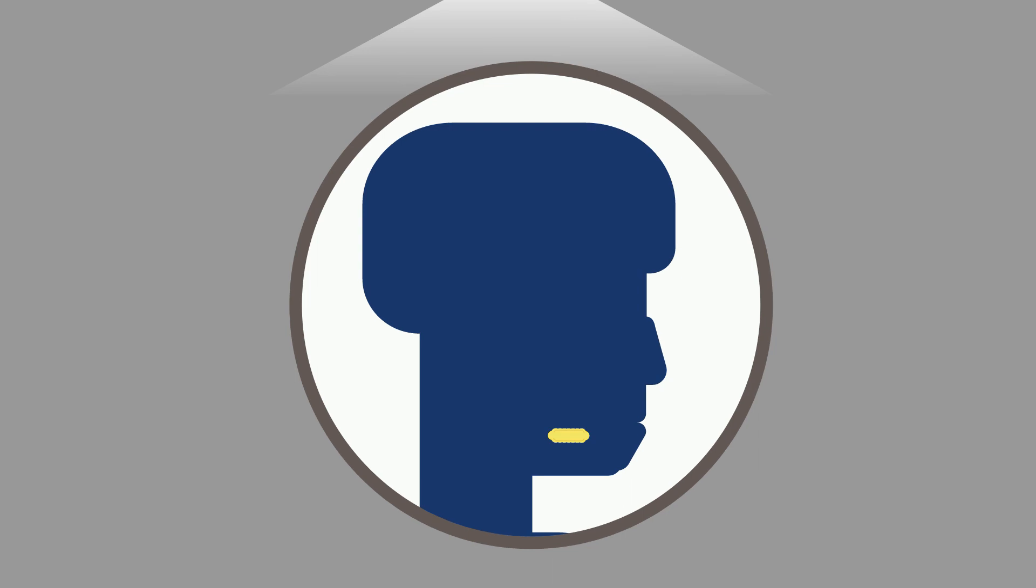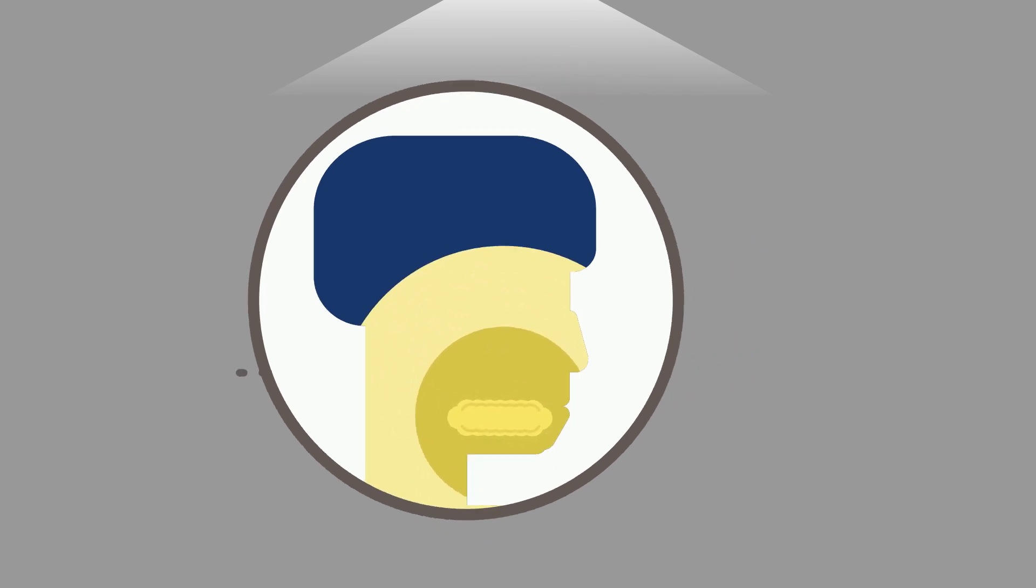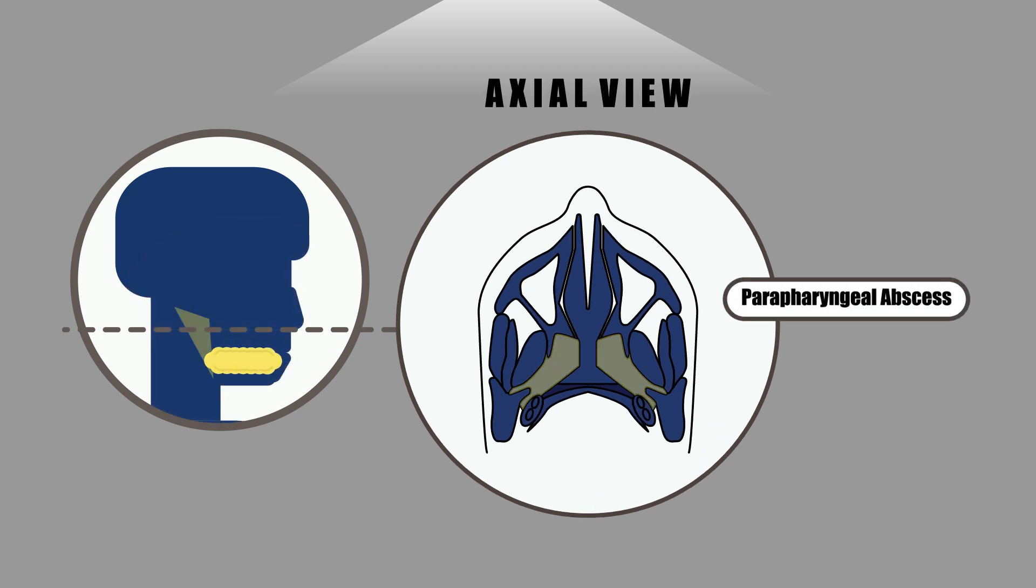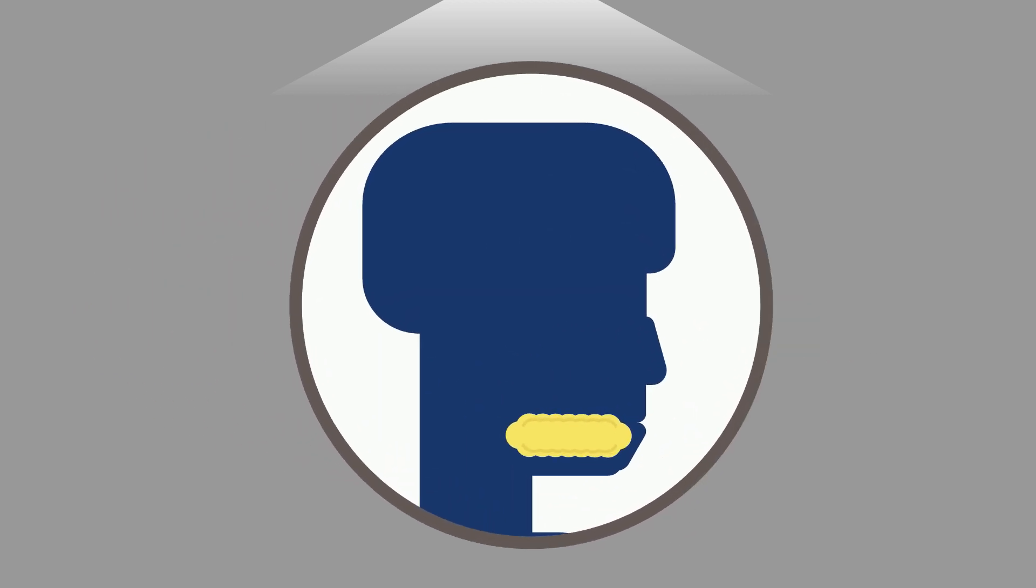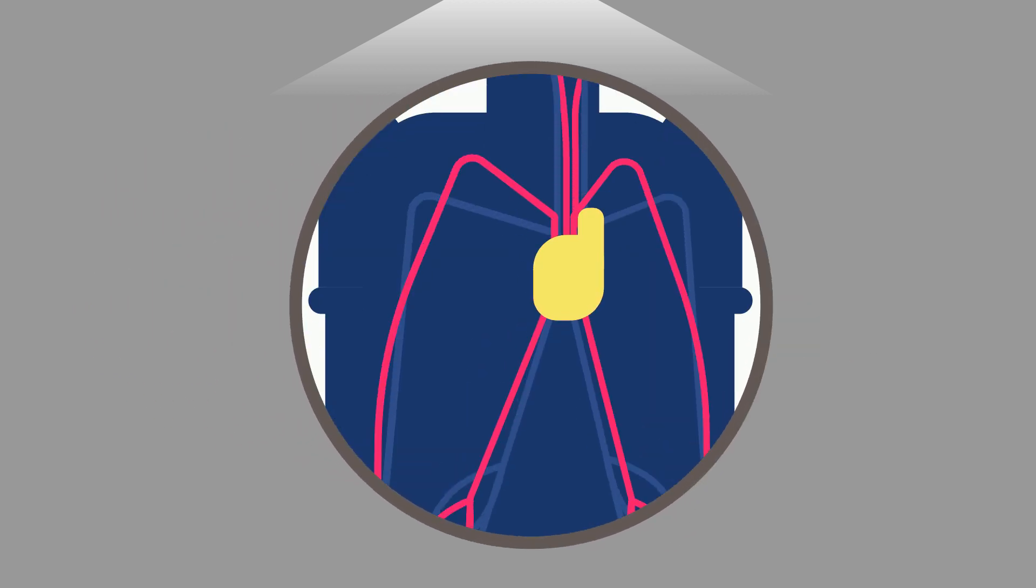Complications: The abscess or pus collection in Ludwig's angina can spread to nearby structures causing parapharyngeal and retropharyngeal abscess. Airway obstruction as it causes laryngeal edema causing larynx to swell up and obstructing the airflow. Septicemia: The infection can spread through blood to all parts of body.